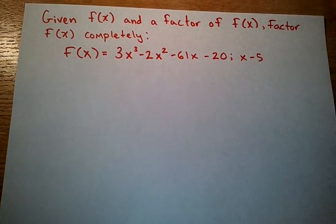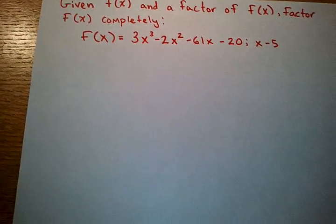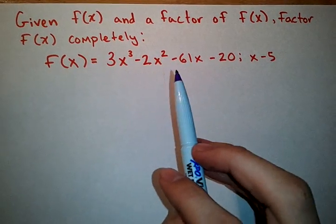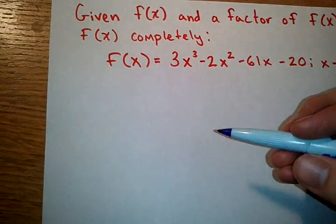And what the problem tells us is that x minus 5 is a factor. Because we know x minus 5 is a factor, we can go ahead and divide the polynomial, divide f of x, by the given factor. And I'm going to do synthetic division for this.